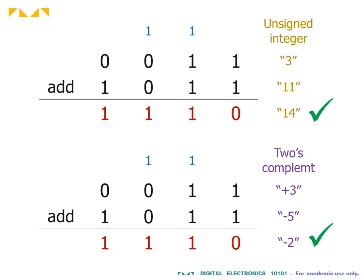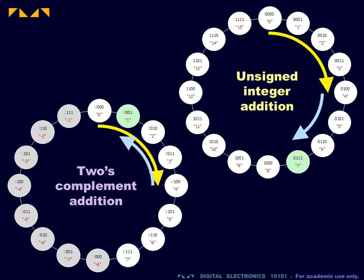In either representation, the correct answer will always be obtained so long as the answer falls within the valid range of values.